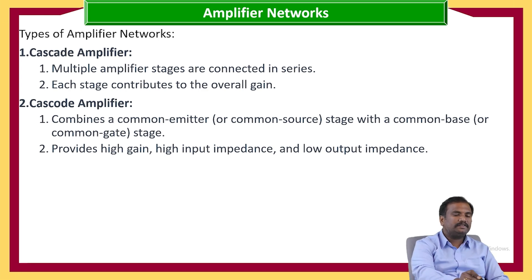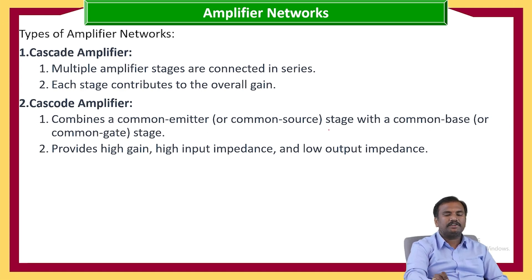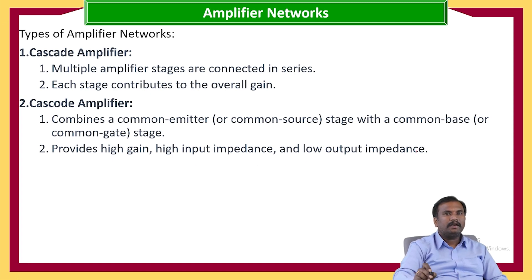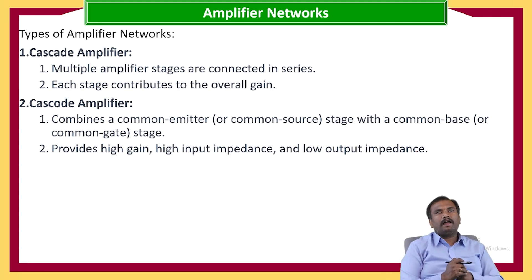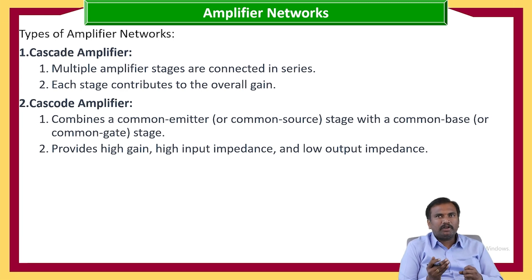The next type is the cascode amplifier. It combines a common emitter stage with a common base stage, which provides high gain, high input impedance, and low output impedance.